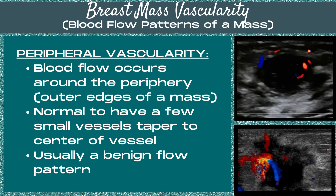Another method of characterizing breast mass vascularity is peripheral vascularity versus central vascularity. With peripheral vascularity, the blood flow occurs around the periphery or the outer edges of a mass. It's normal to have a few small vessels that taper to the center, and this is usually a benign flow pattern. The top image on this slide represents peripheral vascularity, where the vessels are small and tapered around the edges of the mass.